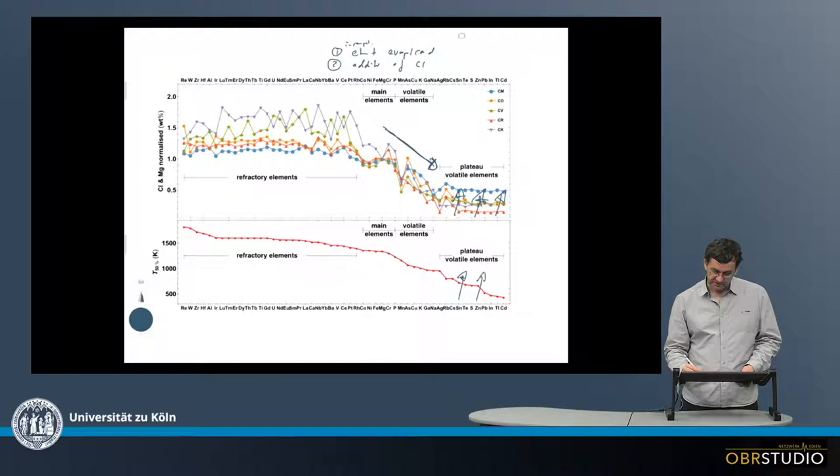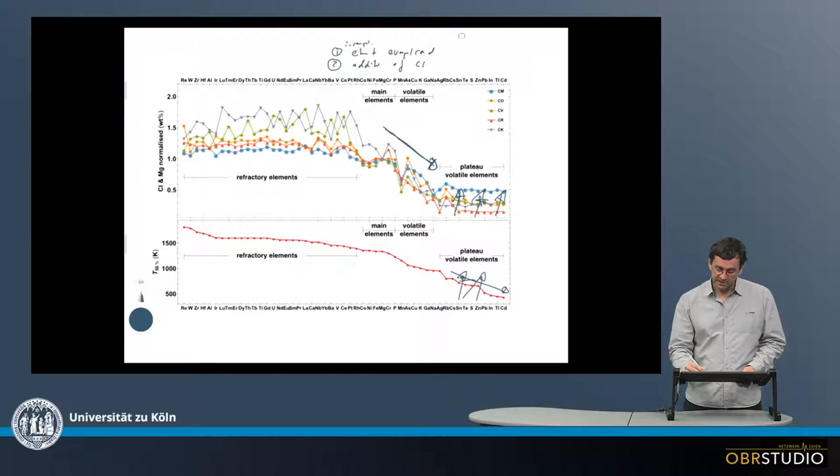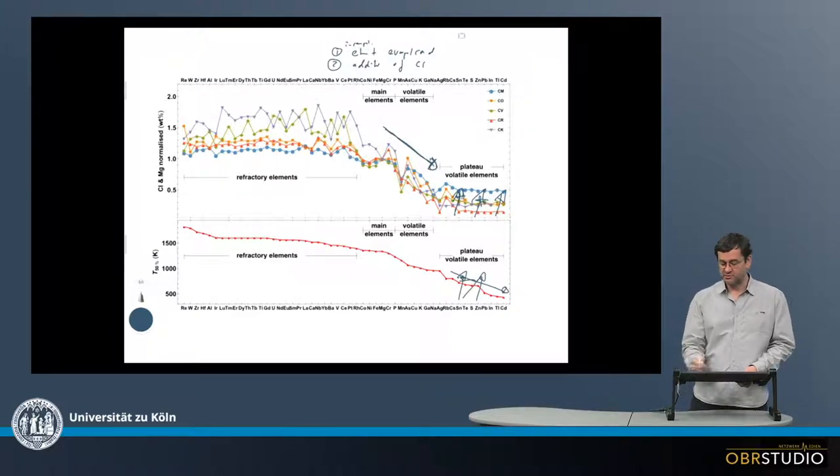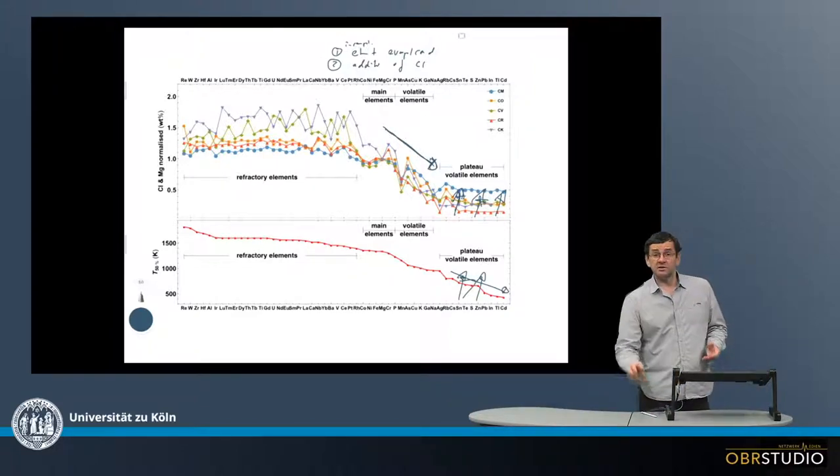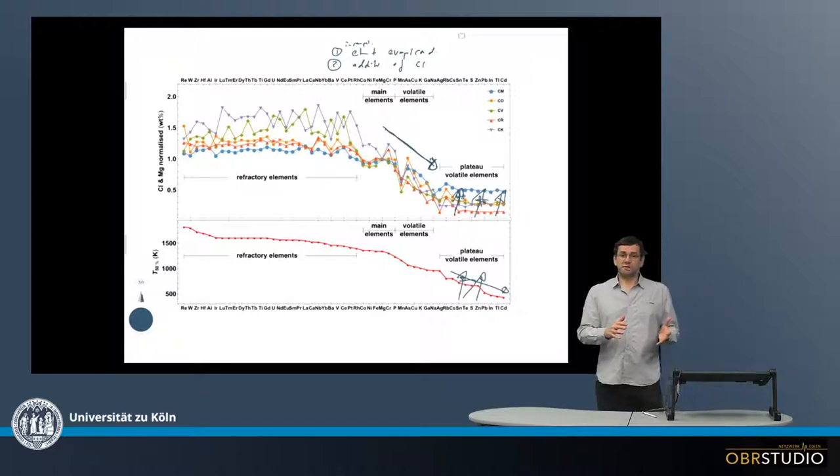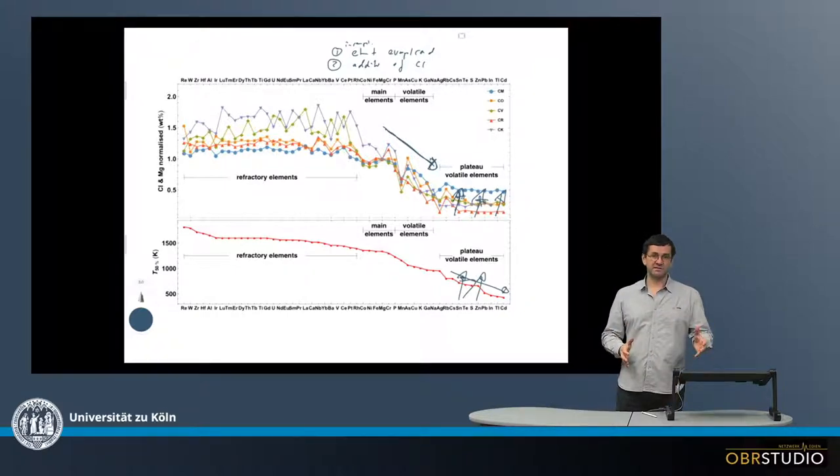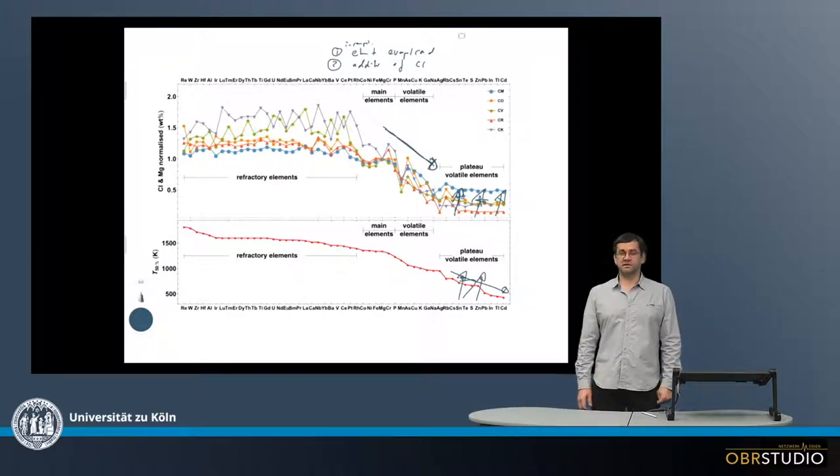So basically, this would be expected that there's this depletion which didn't happen, and then the addition of CI material produces the plateau. So looking at the bulk composition of chondrites, it's very useful to learn something about the protoplanetary disk and the processes in there. In this case, this would be initially incomplete evaporation or condensation, and then in the second step, the addition of material. And this is what we can learn from the bulk element patterns.